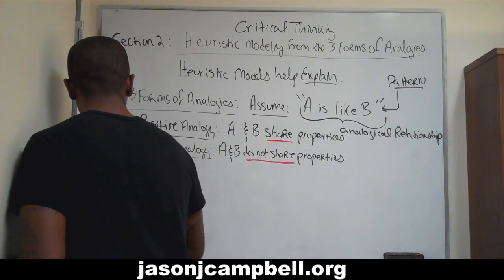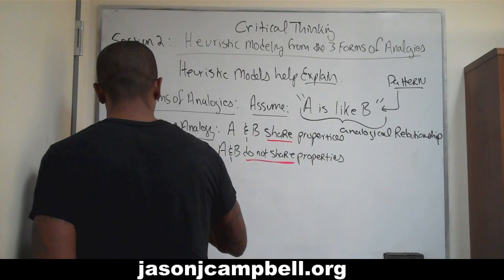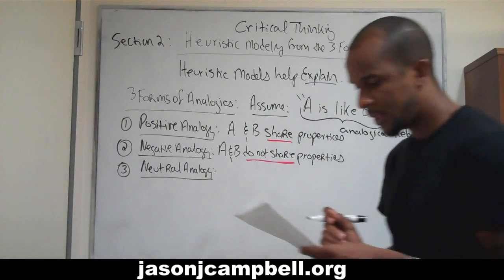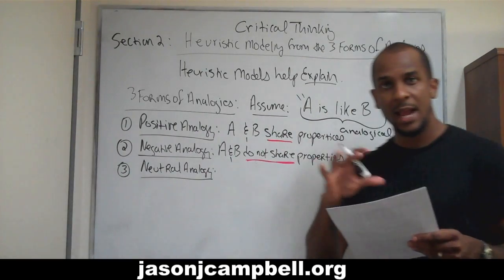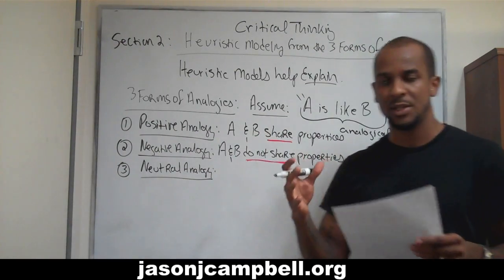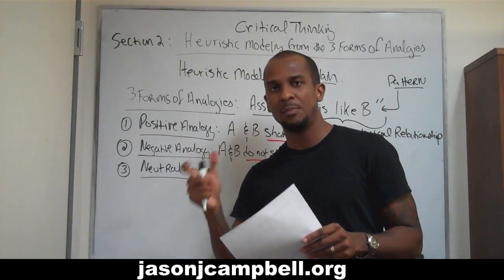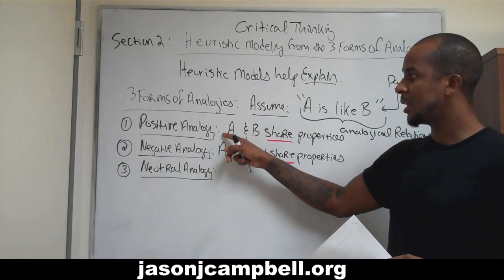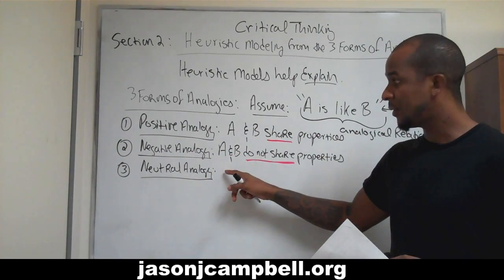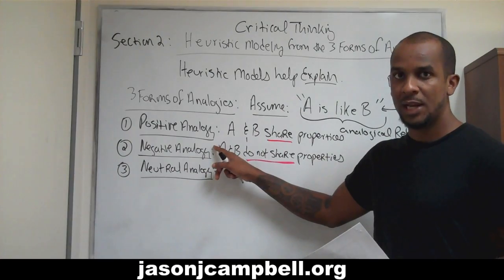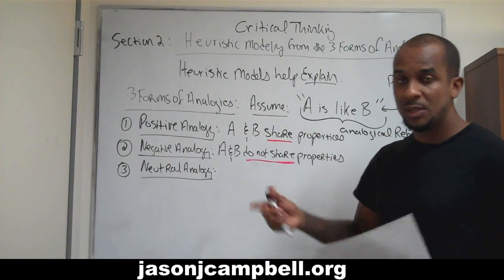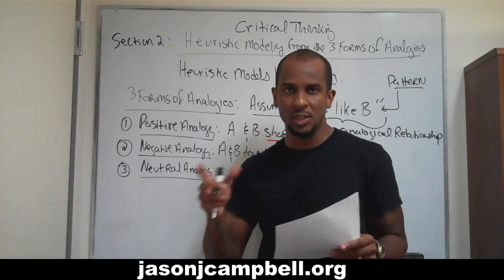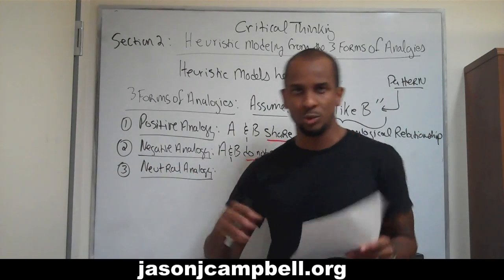Number three, we can have a neutral analogy, and this says A and B may or may not share properties. This is known as contingency. A and B may or may not share properties, meaning that if they share properties, it becomes a positive analogy. If they end up not sharing properties, they become a negative analogy. At the point of assessment, we don't quite know whether or not they share properties. Positive: share. Negative: don't share. Neutral: may or may not share.